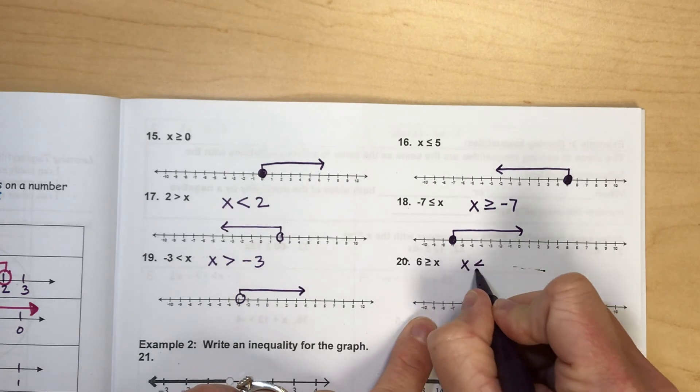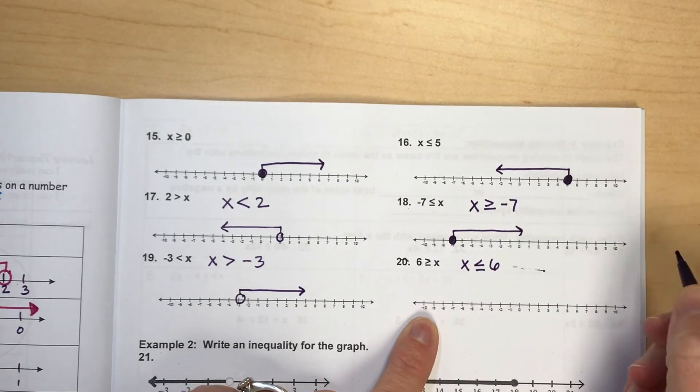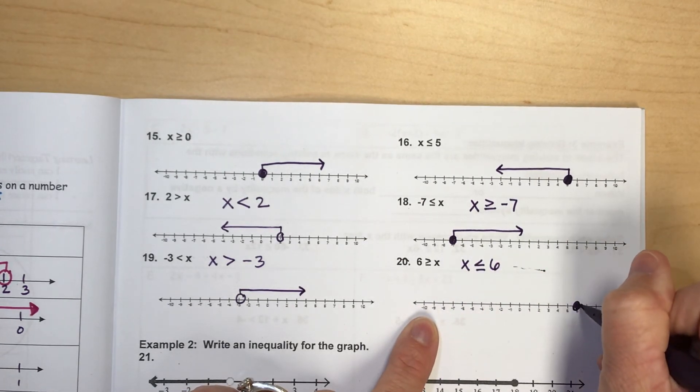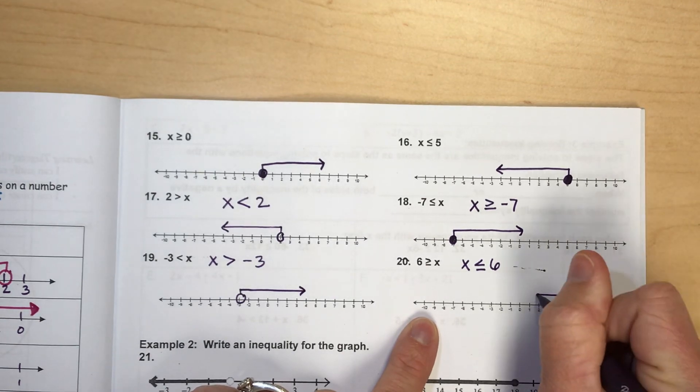And then x is less than or equal to 6. I'm going to find 6 and shade it in. And then I'm going to shade to the left.